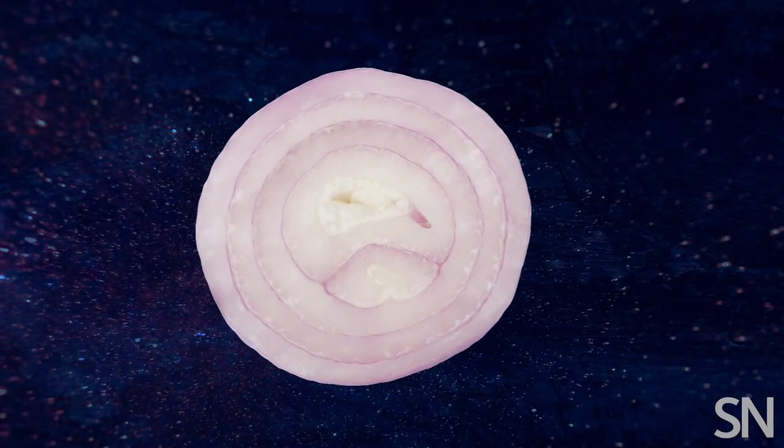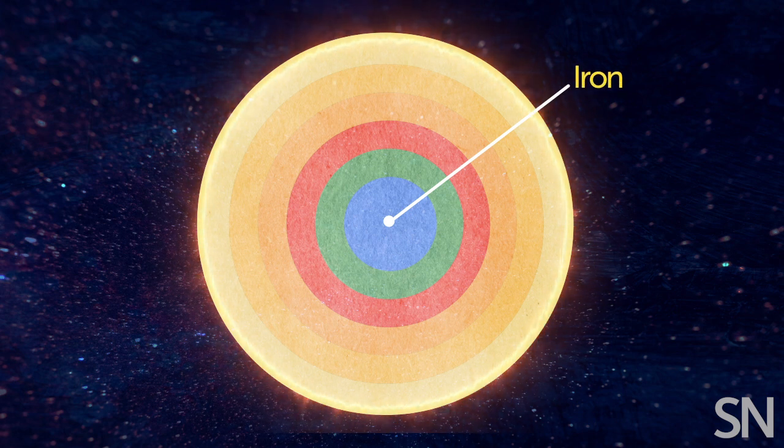Before stars go supernova, they are layered like an onion, with heavier elements like iron in the center and lighter elements like hydrogen on the outside.